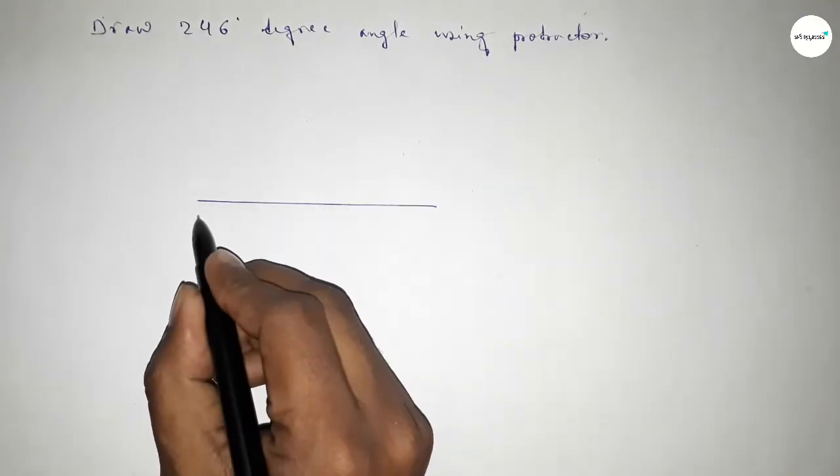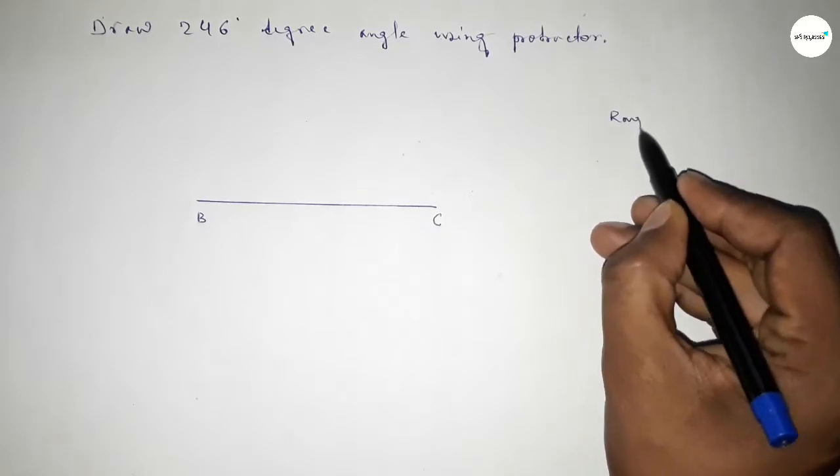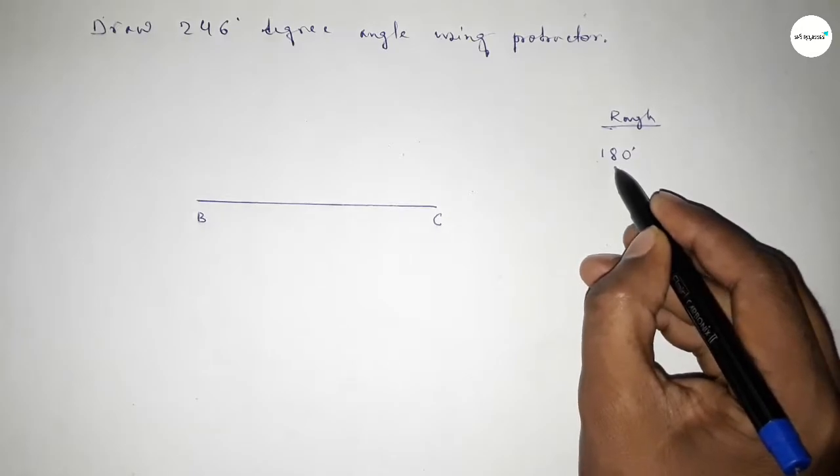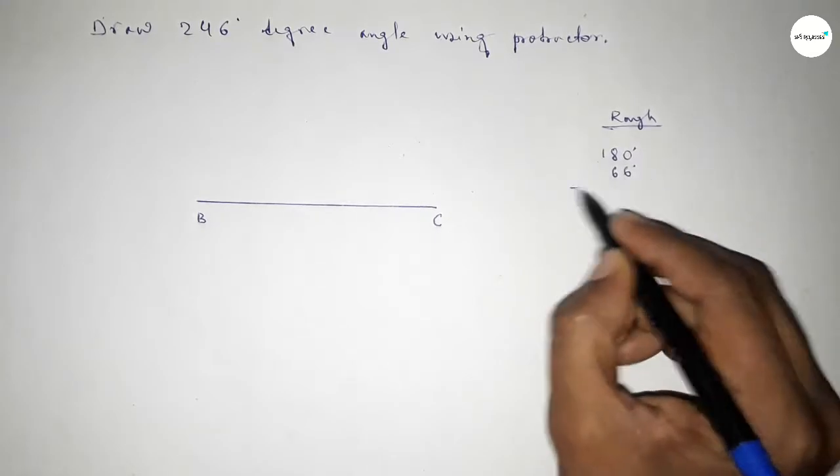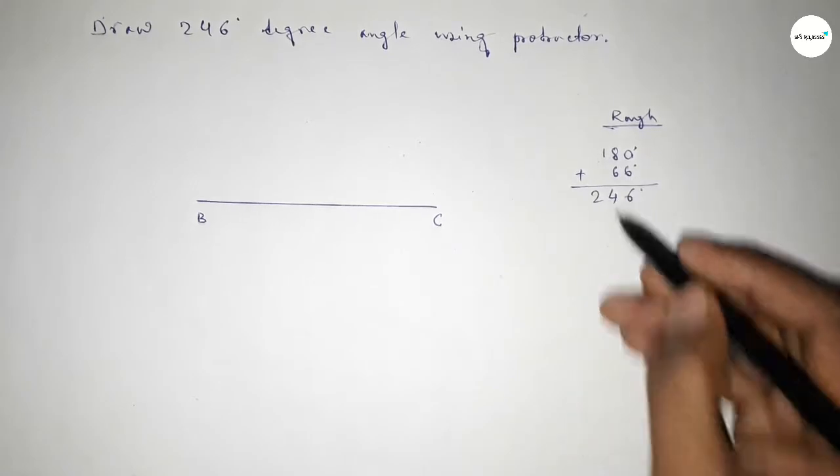Now let's discuss the calculation. If we add 66 degrees to 180 degrees, we can get 246 degrees. So 6 plus 4 equals 10, carry 1, gives us 246.